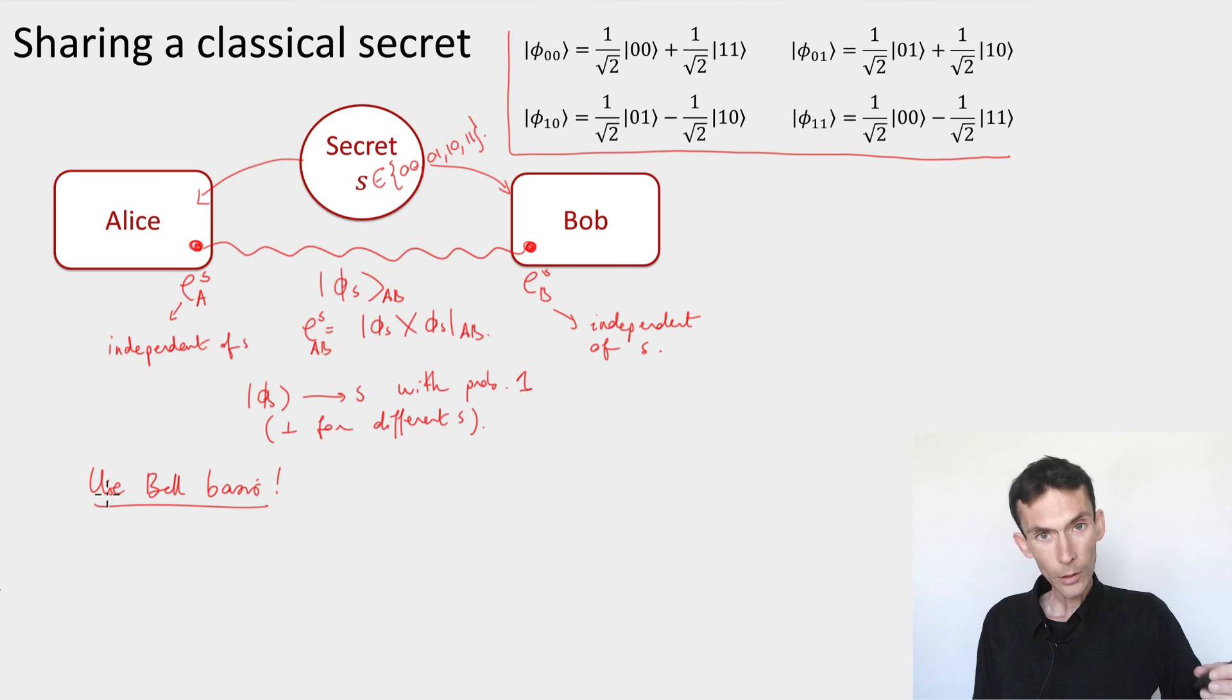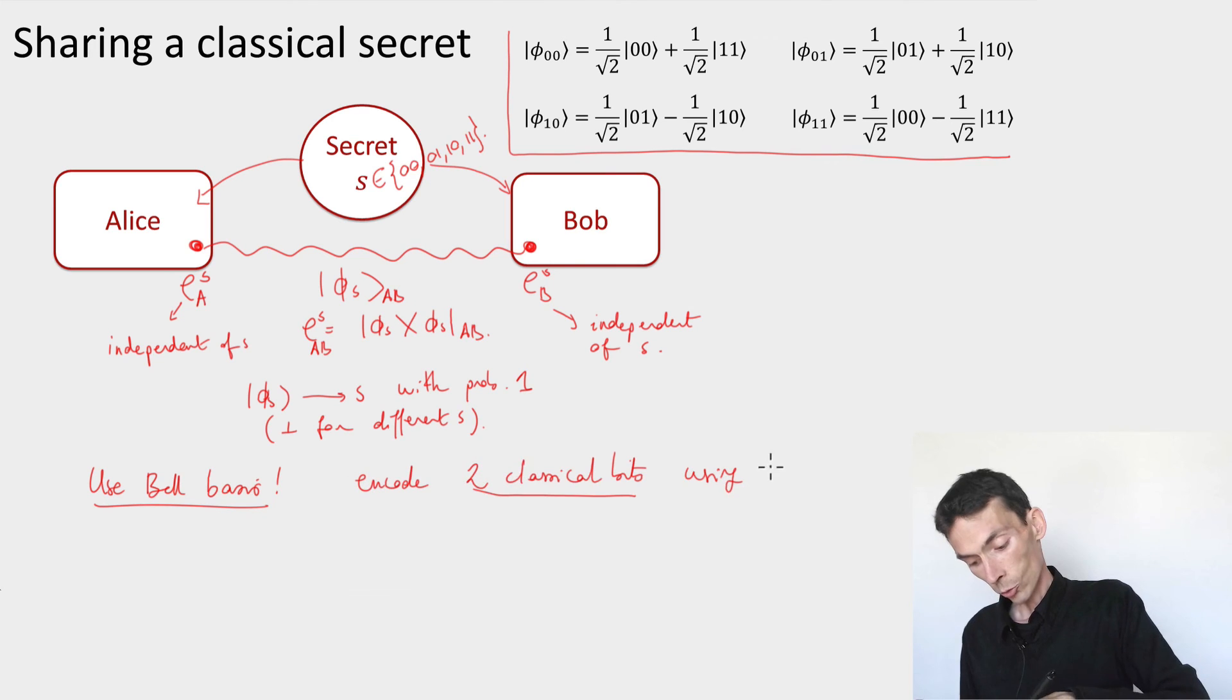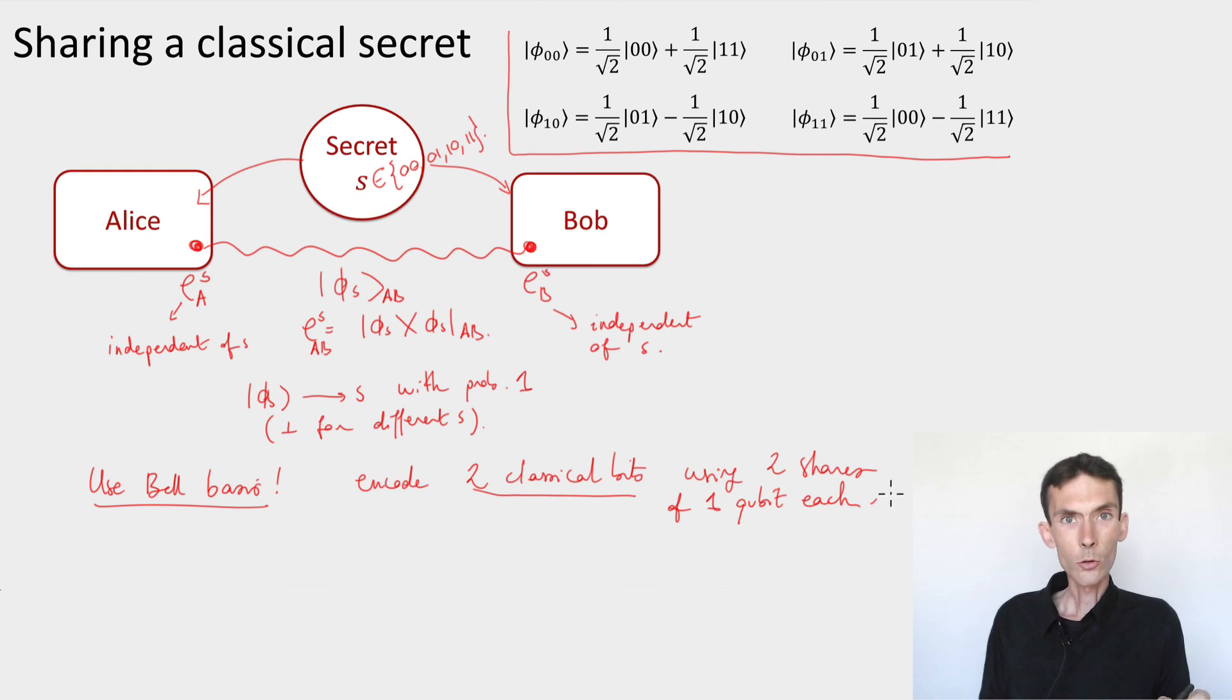So that's it. Now we've managed to encode two classical bits using two shares of only one qubit each. So this is a scheme that's twice as efficient as the classical scheme. Now, it has one drawback, which is not a problem in terms of a secret sharing scheme, but is something to keep in mind.